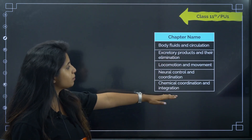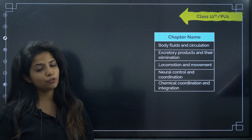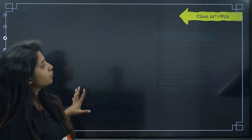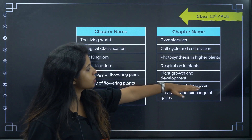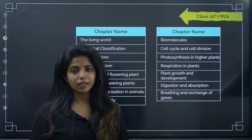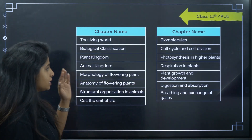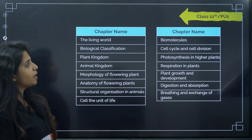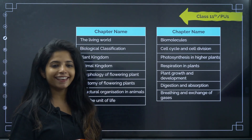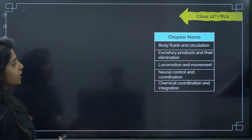There's one more set of chapters: 'Body Fluids and Circulation' going up to 'Chemical Coordination and Integration.' These chapters will also be there. Altogether, excluding 'Digestion and Absorption,' it comes out to be 19 chapters in 11th grade. These chapters will definitely entice you.